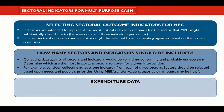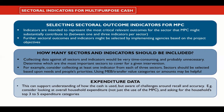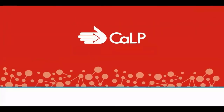Practitioners may also choose to collect expenditure data. There are obvious potential benefits to this in understanding how the cash is actually used, but it's also worth being aware of challenges around recall and accuracy. For example, it's recommended that expenditure-based indicators should inquire about overall household expenditures, not only the use of the MPC transfers. Also, instead of measuring exact amounts, agencies may wish to simply ask people the three or five most important expenditure categories, as part of a lighter, people-centred approach. Thank you for listening.